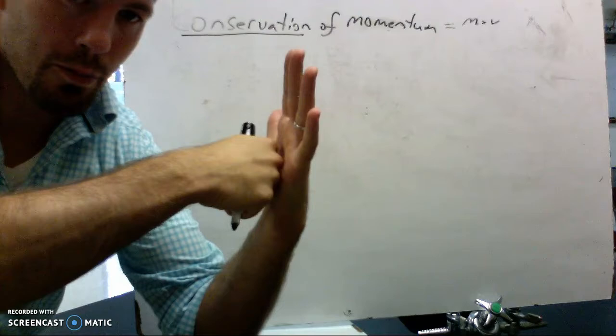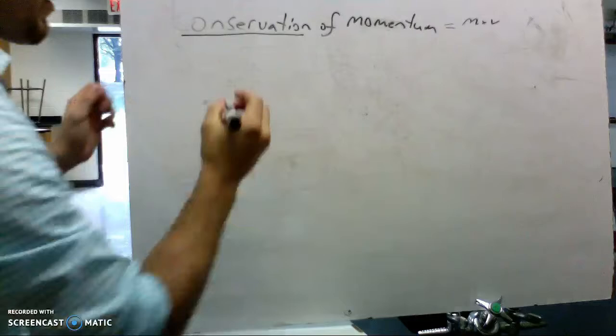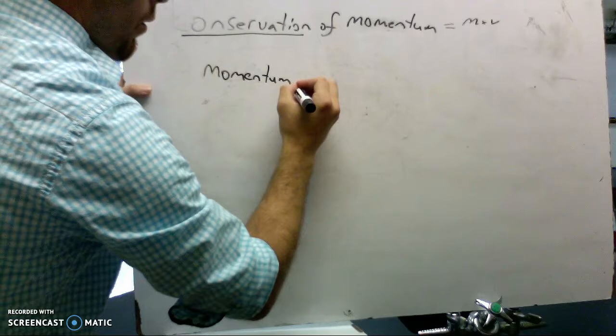In some cases, we're going to get a hit and then move through. In other cases, what's going to happen is we're going to get a hit and kind of a bounce. Either way, we're going to get some transfer of momentum. But remember that momentum at the beginning or initial momentum is going to be equal to the momentum at the end or the final momentum.